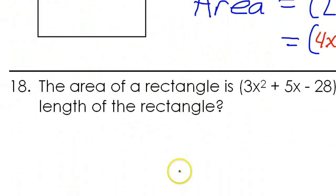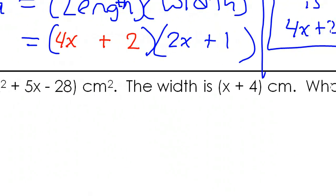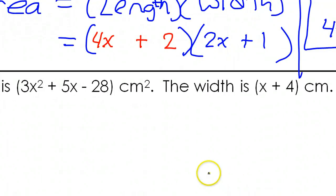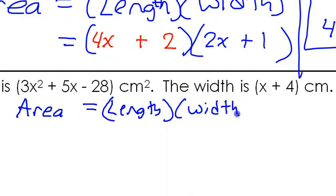Number 18. The area of a rectangle is 3x² + 5x - 28. The width is x + 4. What is the length? It's basically the same problem again. Area is equal to length times width. And this is the area. Now they gave us the width. So the area is going to equal the length times x + 4. They gave us the width. So here we go again.